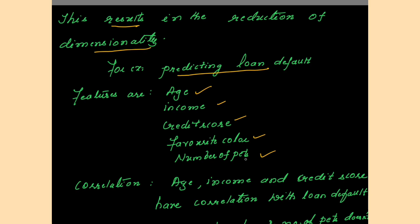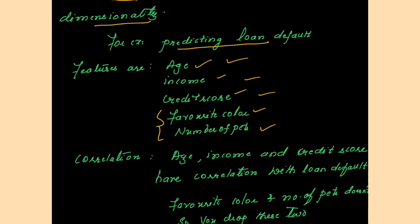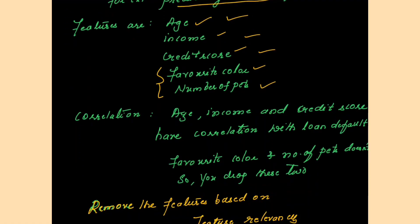Looking at these attributes, age may be relevant, income may be relevant, and credit score may be relevant for predicting loan defaulters. But favorite color and number of pets have nothing to do with the repayment of the loan, so you can delete those attributes. Using correlation, age, income, and credit score are found to have high correlation with loan default, but favorite color and number of pets do not — so you can drop these two features.